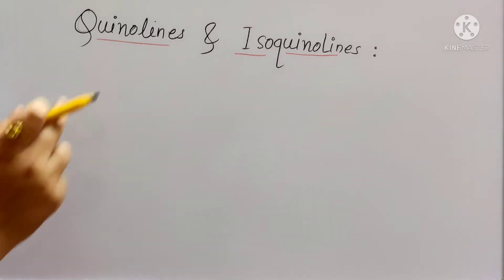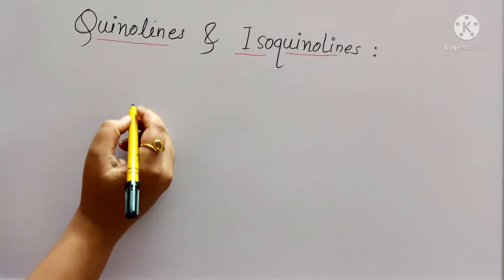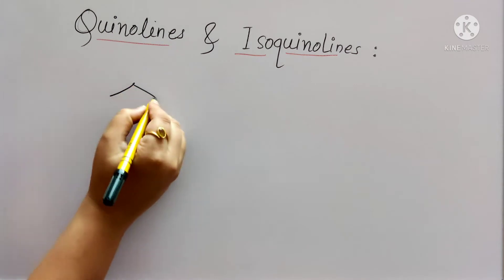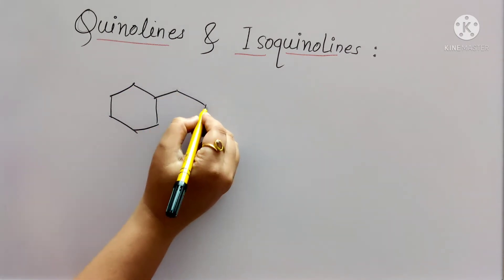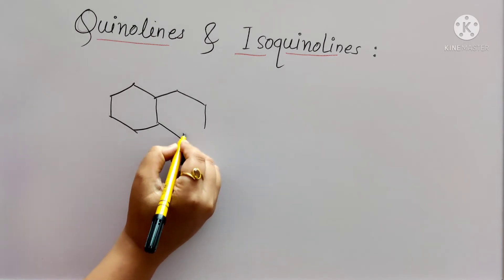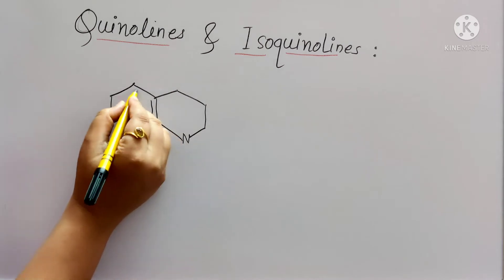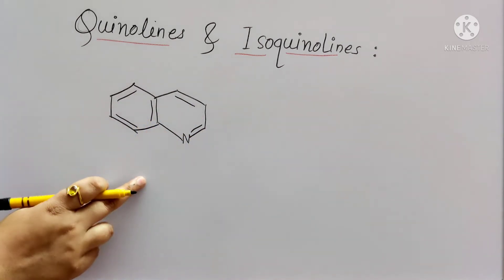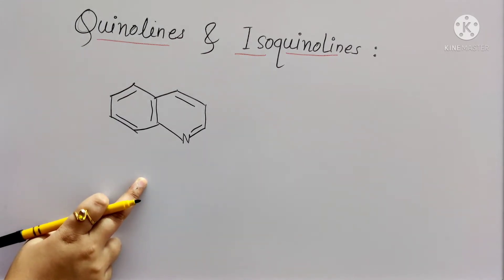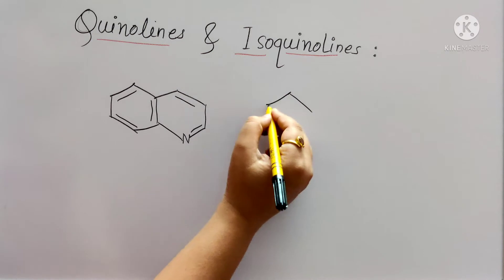First we will see the structure for simple quinoline. Here the heteroatom present is nitrogen. This is the structure for quinoline.